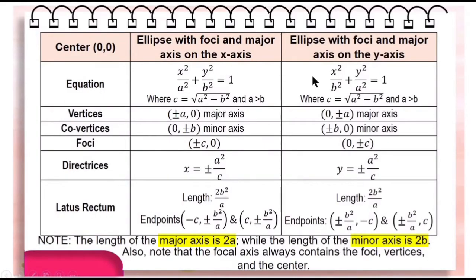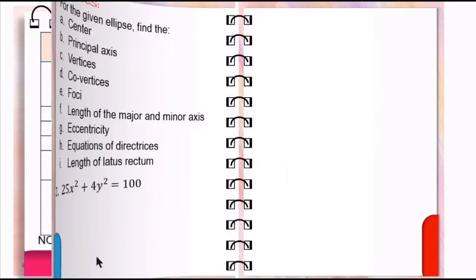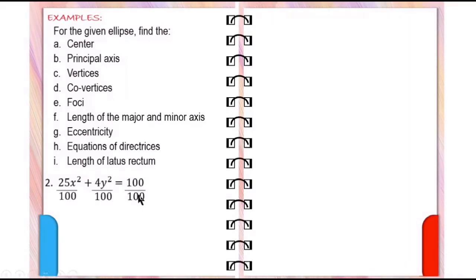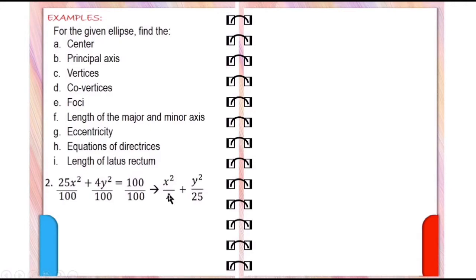The right-hand side of the standard equation of an ellipse should be equal to 1. Therefore, we need to divide this equation by 100. So we have x squared over 4 — since 25 over 100 is 1 fourth, 25 divided by 25 is 1, and 100 divided by 25 is 4 — plus y squared over 25, since 4 over 100 is 1 over 25, 4 divided by 4 is 1, and 100 divided by 4 is 25, equals 1.